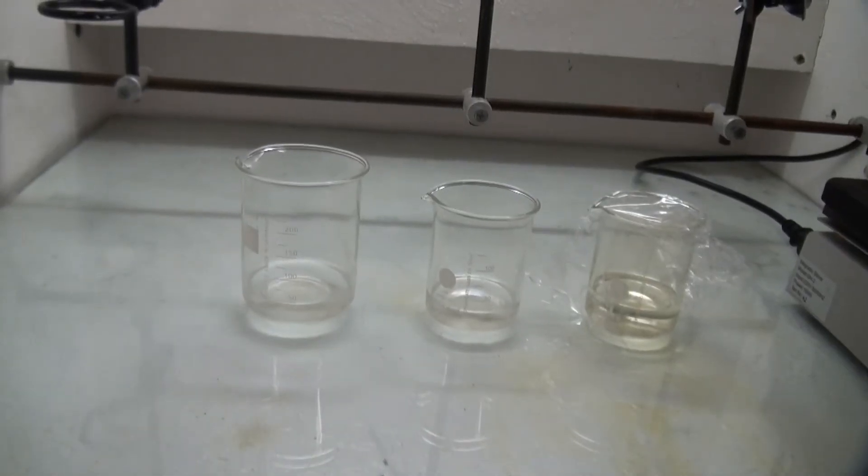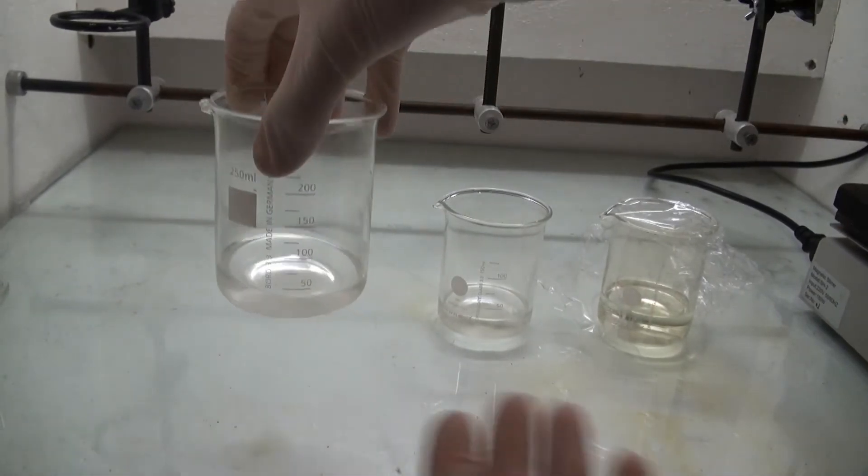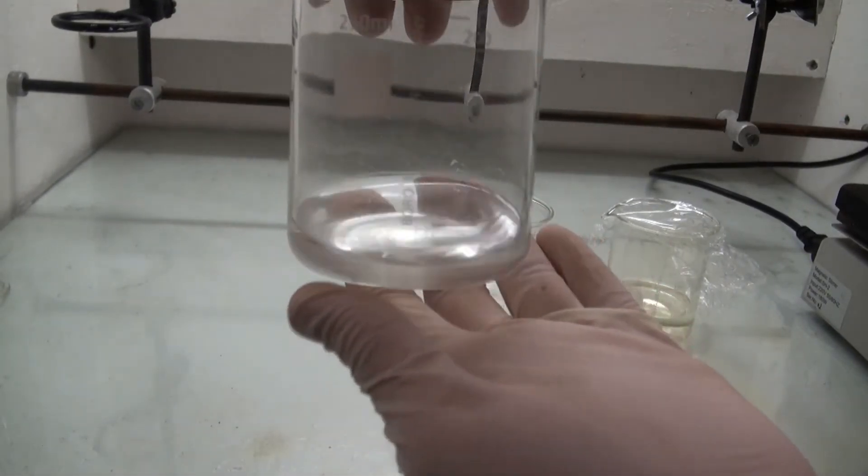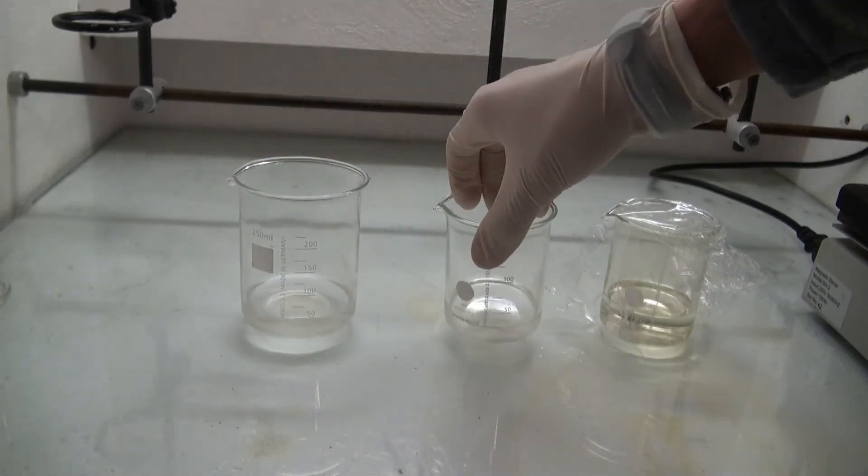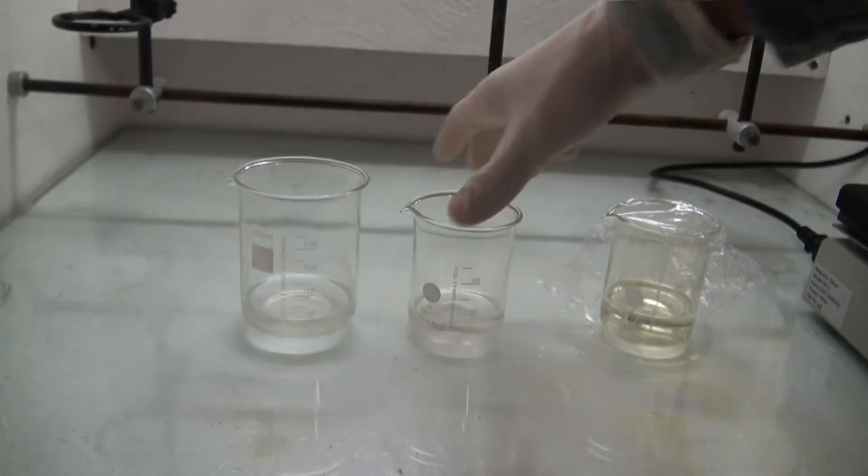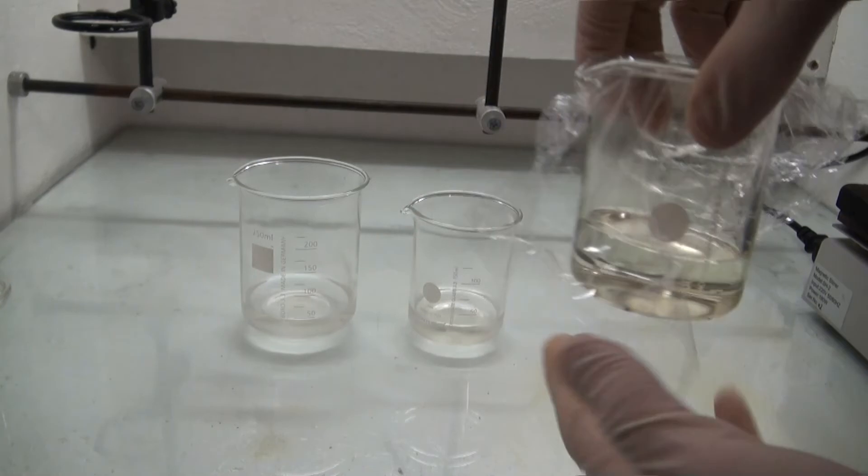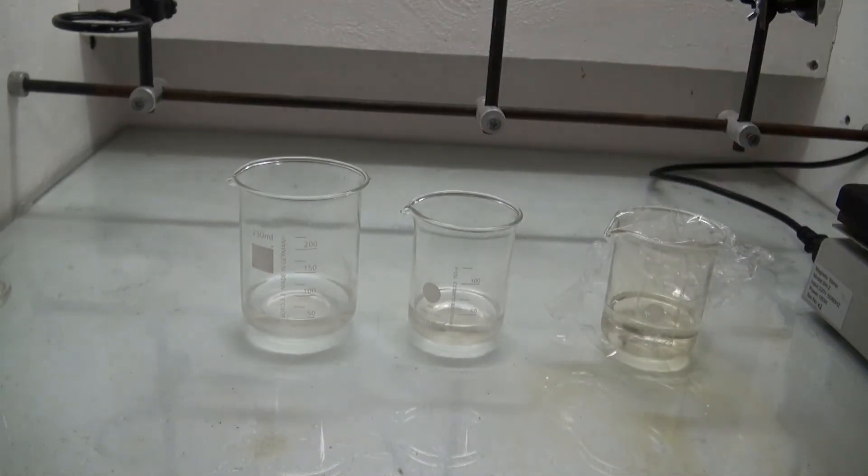Now here are the three fractions. The left one is the water fraction that came over from 98 to 104C. The middle one is the fraction between 104 and 120C, and the right one is the azeotropic fraction that came over after the temperature reached 120C.